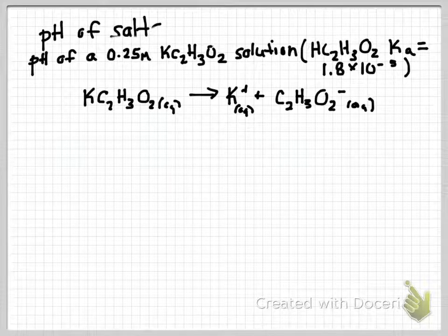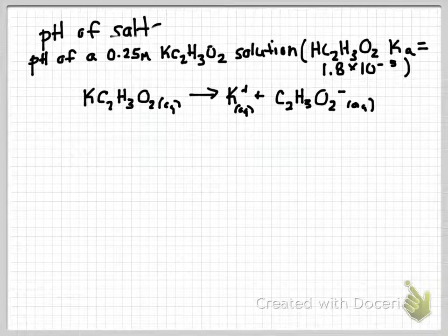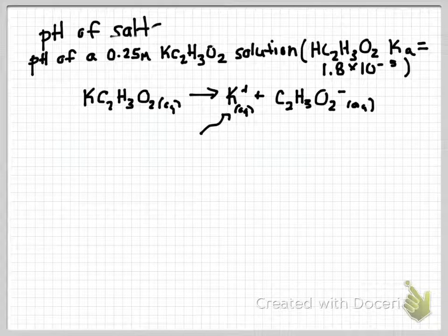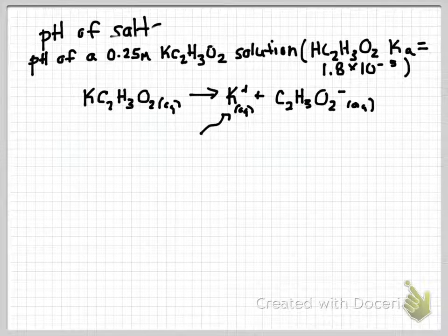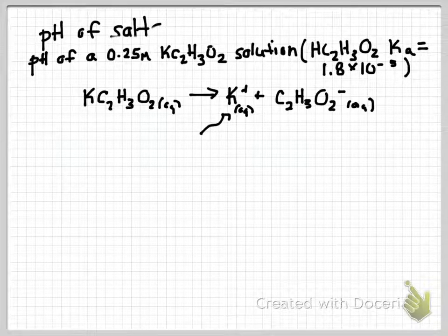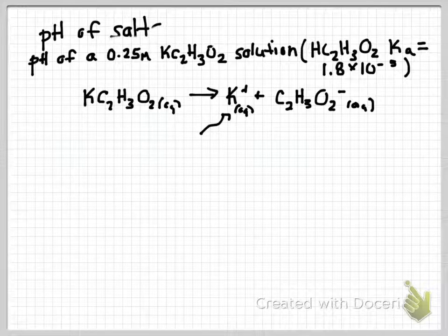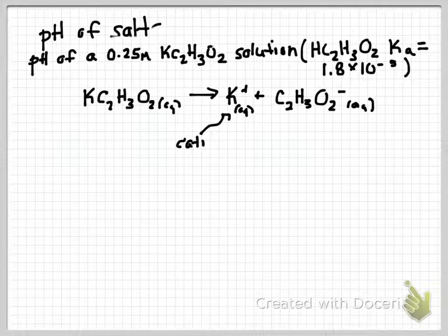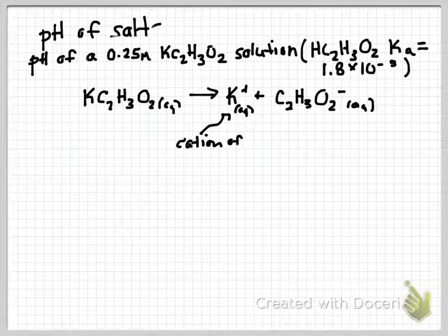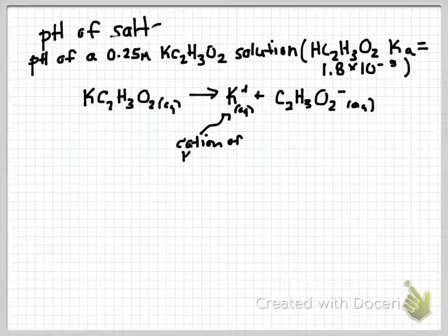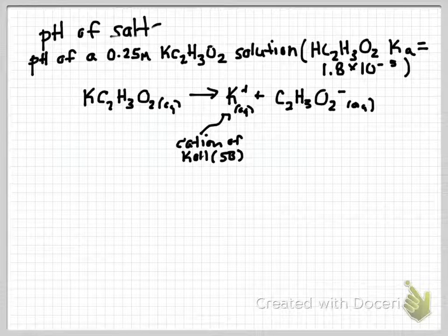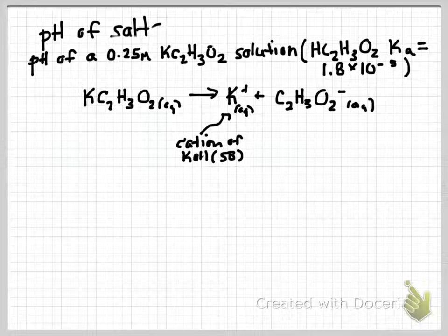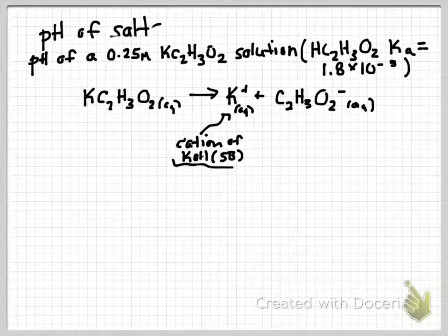First, we can look at our cation, K plus or potassium ions, and we'll recognize that this is the cation of a strong base, KOH, which is a strong base. And because of that, this cation will be neutral.